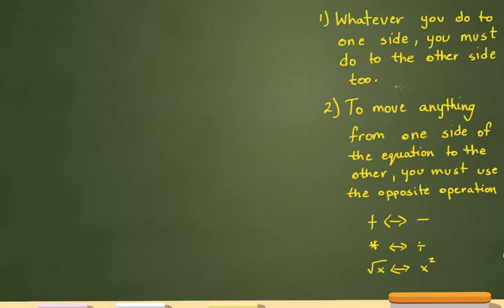So let's go into a few examples to illustrate these points. If I have 3x minus 4 equals 2x plus 10, my first step will be to get all my variables together and get all my constants together.